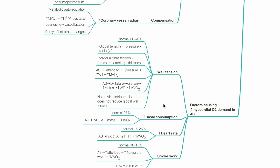Second: increased basal oxygen consumption, as aortic stenosis leads to left ventricular hypertrophy and increased myocardial mass, increasing myocardial oxygen consumption. Third: increased heart rate — there is increased risk of atrial fibrillation and tachycardia, leading to increased myocardial oxygen demand. Last: increased stroke work — aortic stenosis leads to increased afterload due to outflow tract narrowing, which increases pressure work and myocardial oxygen consumption.